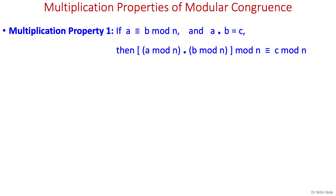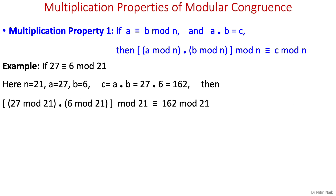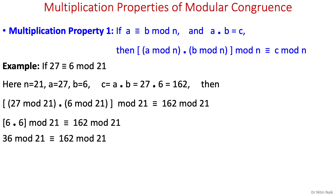Now, multiplication properties of modular congruence. The first property states that if we are multiplying two integers a and b and their product is c, then calculating c mod n is the same as multiplying a mod n by b mod n and then calculating their product mod n. For example, if 27 is congruent to 6 mod 21, we know the values of n, a, b, and c. Placing these values in the congruence relation and finding the mod, we get the final relation and their mods are equal. So this multiplication property is true.